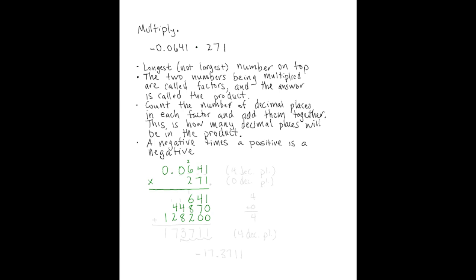So I have all of my partial products, and I can draw the line now where I'm going to add them all together. We're going to add right down the row. 1 plus 0 and 0 gives me 1. 4 and 7 is 11, so I'll write this 1 and carry a 1. The 8 and 2 make 10, and then the 6 makes 16, and 1 more makes 17.